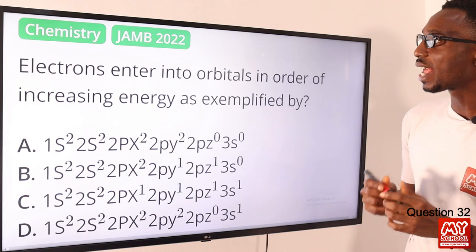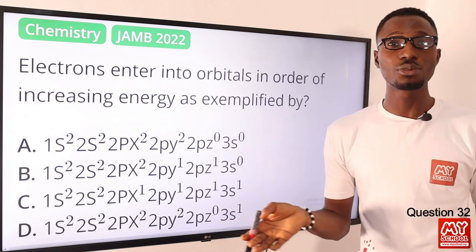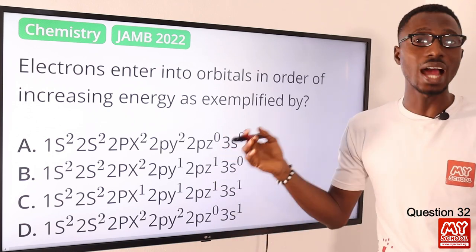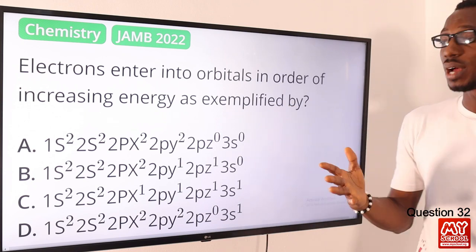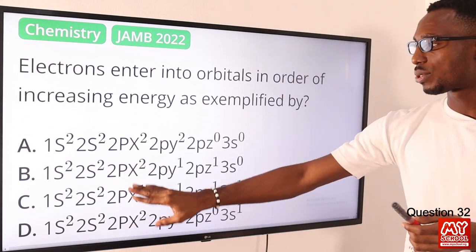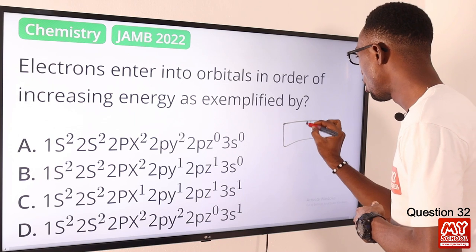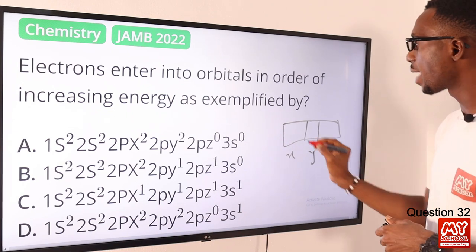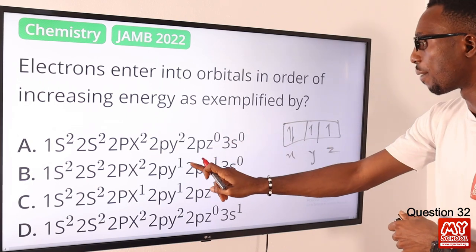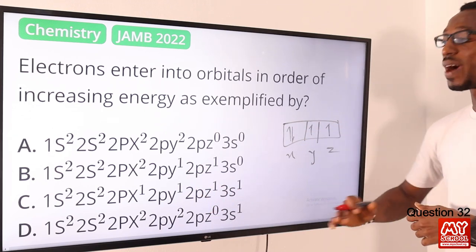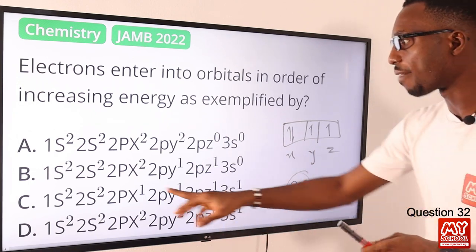Question 32. Electrons enter into orbitals in order of increasing energy — this is the Aufbau (build-up) principle. When you recall your 1s², 2s², 2p⁶, 3s², 3p⁶, 4s², then your 3d and so on — that is the build-up principle, or the Aufbau principle. For the P orbitals, we have X, Y, and Z. The filling goes: first fill X with one electron, then Y with one, then Z with one. Then you start again from X to fill the second electron, then Y, then Z — before moving to 3s.